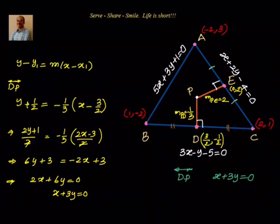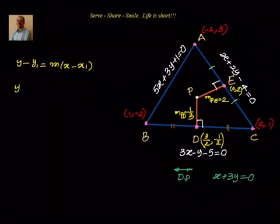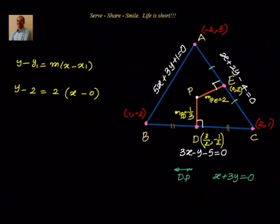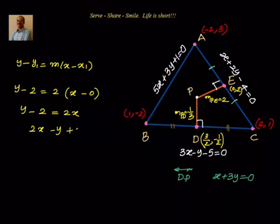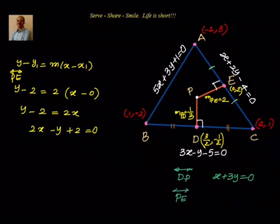Now let us find the equation of PE. Using point-slope form with point E = (0, 2) and slope = 2: Y - 2 = 2(X - 0). The perpendicular bisector passes through the midpoint of the opposite side at 90 degrees to that side. Simplifying: Y - 2 = 2X, or 2X - Y + 2 = 0. The equation of PE is 2X - Y + 2 = 0.